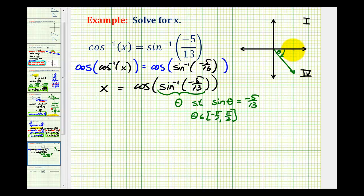If we sketch a reference triangle, we can label the opposite side -5 and the hypotenuse 13. Remember sin(θ) equals the ratio of the length of the opposite side to the hypotenuse.